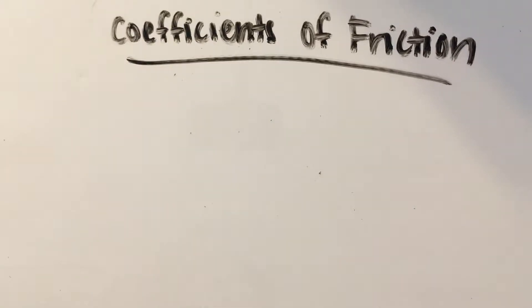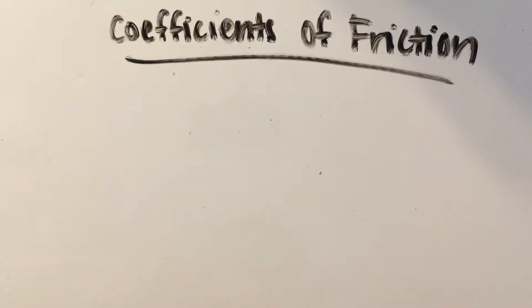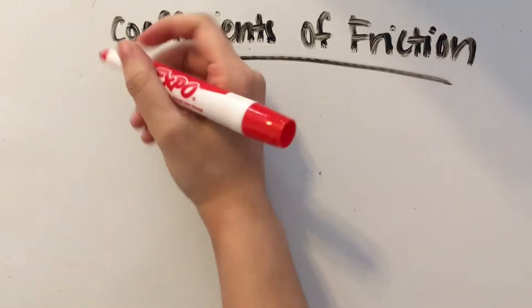Coefficients of friction basically tell us how hard it is to overcome the frictional force that a surface exerts on an object, and they do this by giving us ratios.